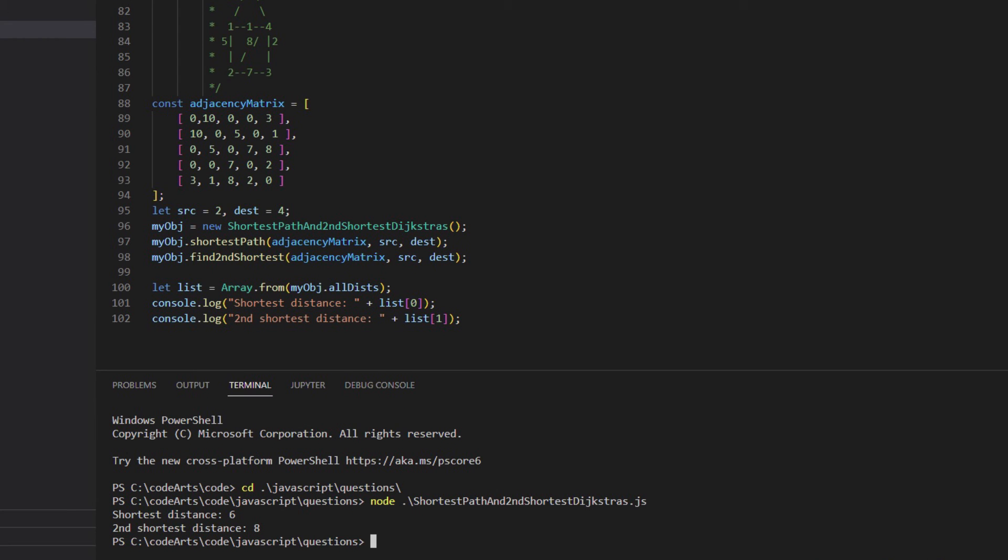Let's run the code. The shortest distance is 6. The second shortest distance is 8. From the previous walkthrough, we know it is correct.